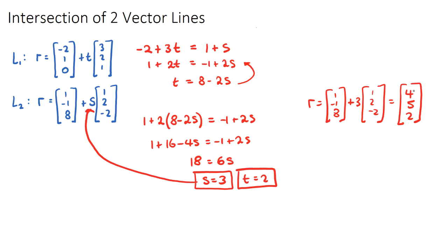So this position vector here, 4, 5, 2, this will be the position vector where they intersect. I could have found this by subbing in t equals 2 into L1. So if the question asks for the coordinate at where these two vectors intersect, we can just say the coordinate will be 4, 5, 2. And this is the coordinate on our plane where these two vectors will intersect.